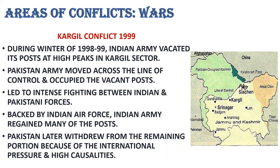However, in May 1999, the Kargil conflict broke out. Pakistani soldiers disguised as Kashmiri militants crossed the Line of Control and occupied strategic positions on the Indian side, which had been vacated by the Indian Army during winters. In a counter-attack, Pakistani forces were pushed back to their side of the original Line of Control. It was the first armed conflict between the two neighbours since they officially conducted nuclear weapons tests.